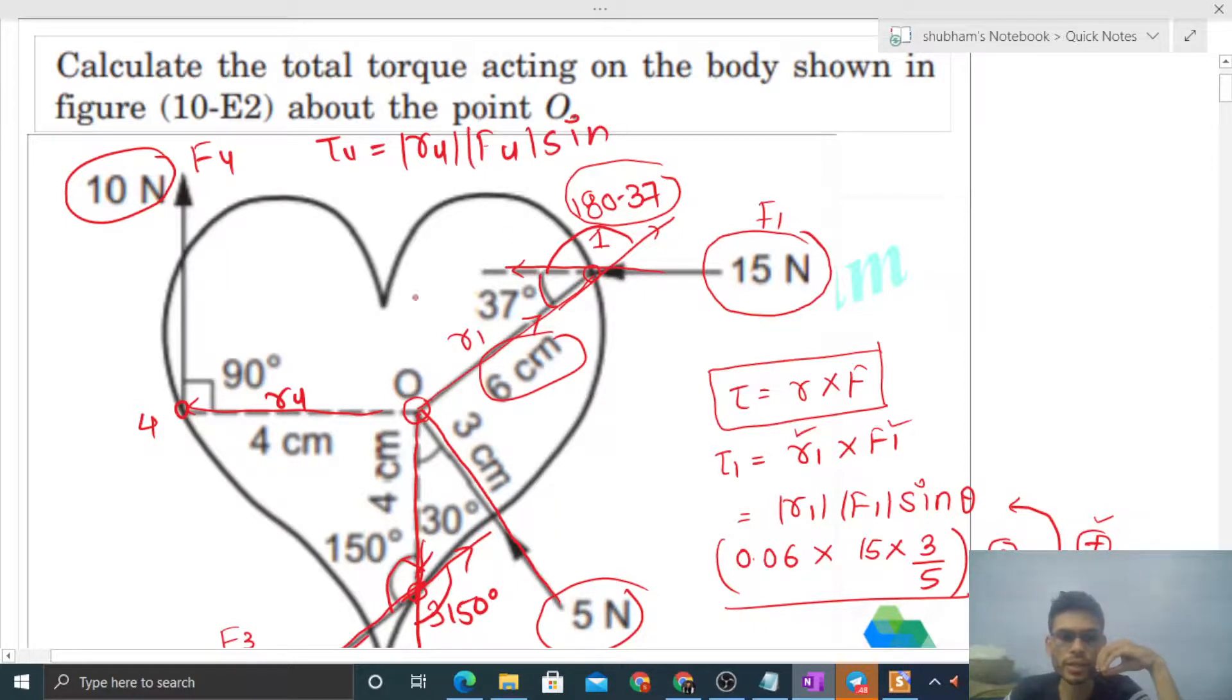Theta 4: this is the R direction, so that angle is 90 degrees. So R4's magnitude is 0.04, that's 4cm, times F4 that is 10, times sine 90. And the direction: R cross F means into the page.